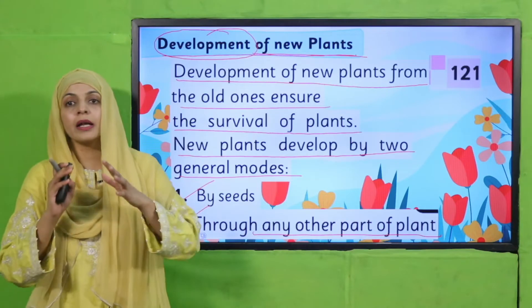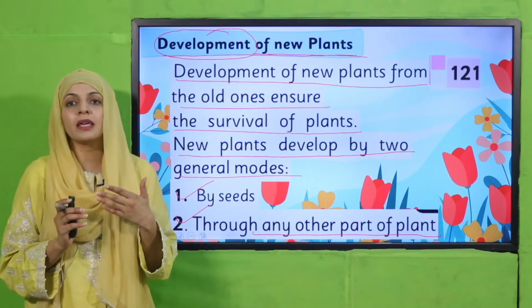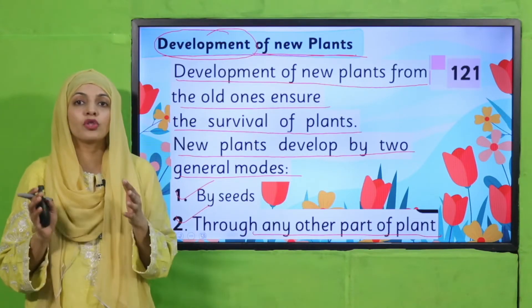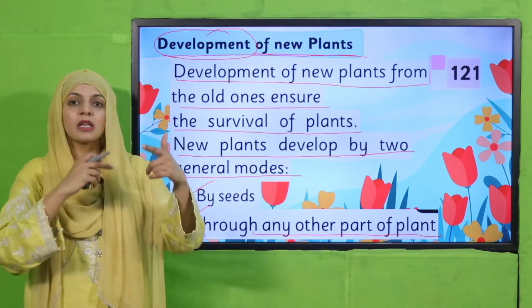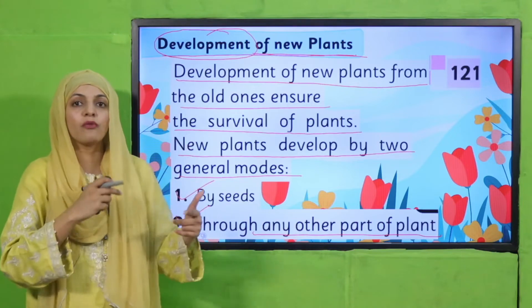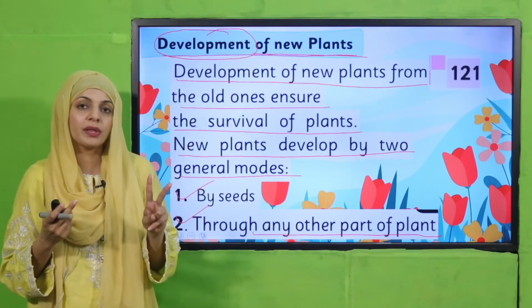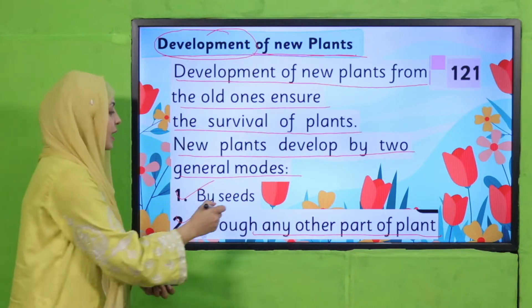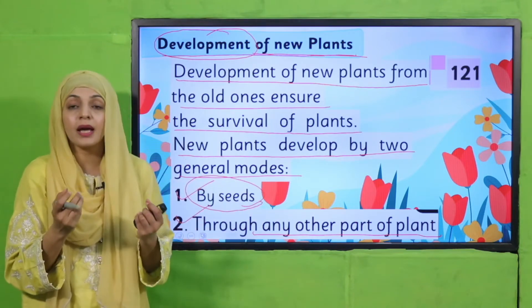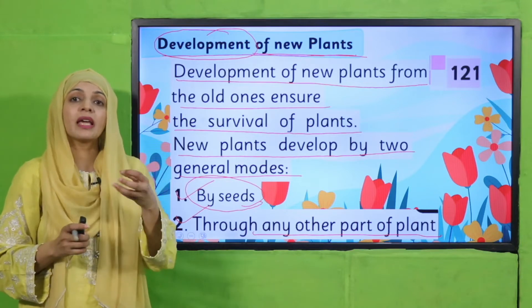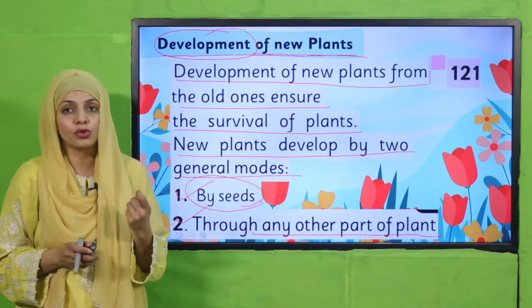If there are no new plants from the old ones, ultimately the generation of plants will end. So this cycle must keep going — new plants need to be made. They are made through two modes: one is by seeds, meaning new plants can be made from seeds.